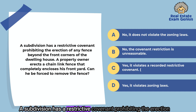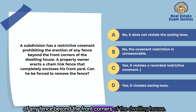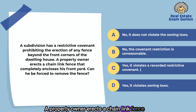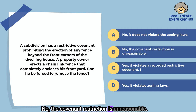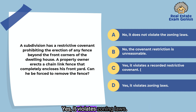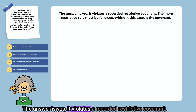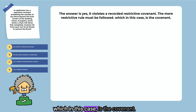A subdivision has a restrictive covenant prohibiting the erection of any fence beyond the front corners of the dwelling house. A property owner erects a chain link fence that completely encloses his front yard. Can he be forced to remove the fence? No, it does not violate the zoning laws. No, the covenant restriction is unreasonable. Yes, it violates a recorded restrictive covenant. Yes, it violates zoning laws. The answer is yes, it violates a recorded restrictive covenant. The more restrictive rule must be followed, which in this case is the covenant.